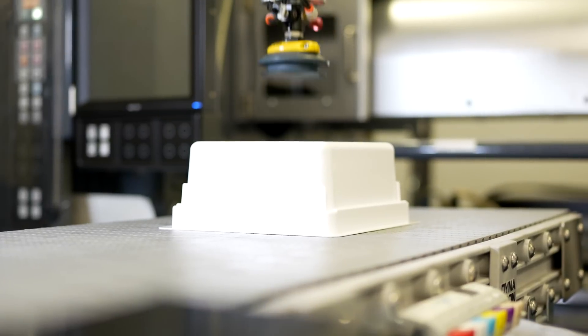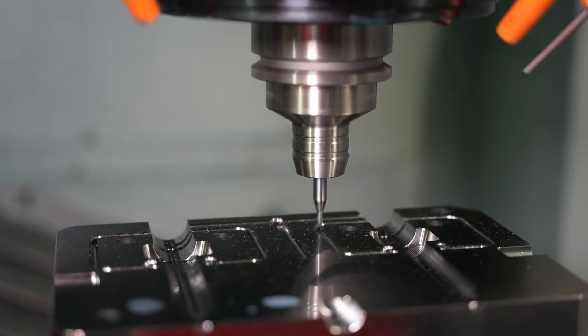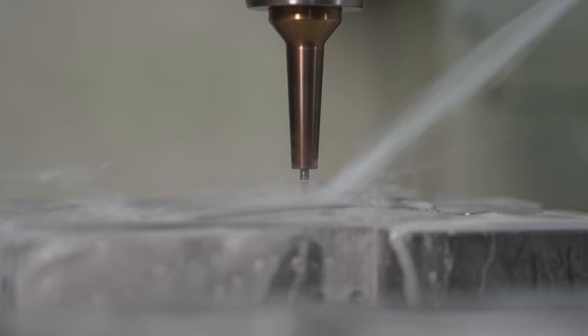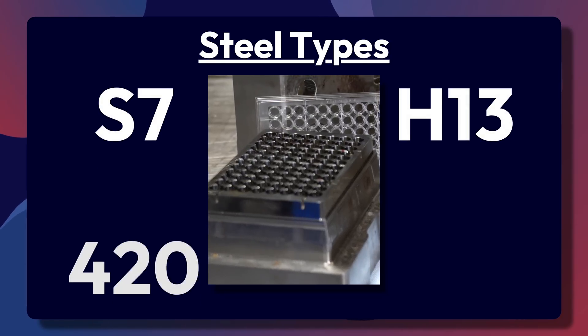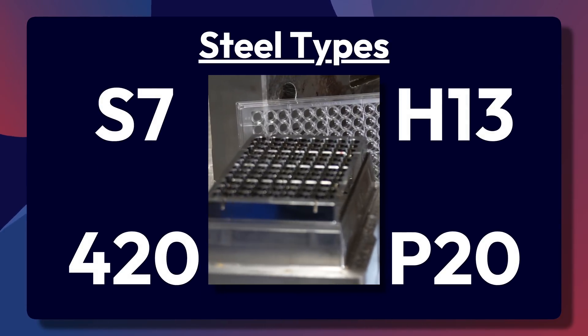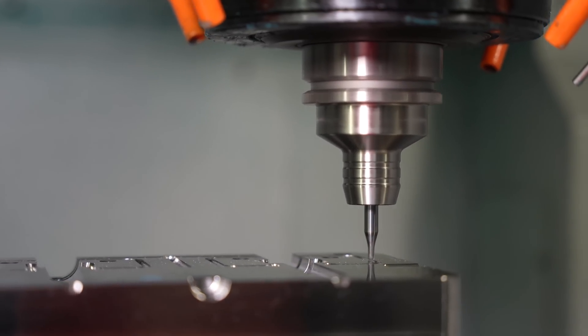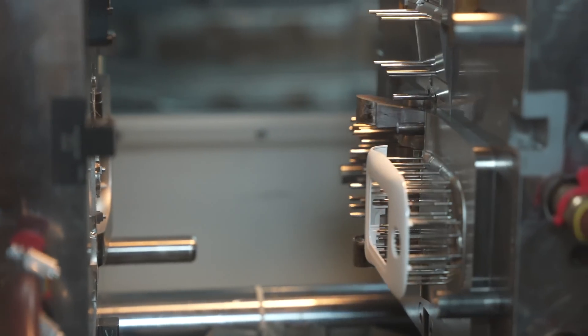Before we talk about the advantages and disadvantages of a single cavity tool, it's worth briefly discussing the different types of materials that can be used when building an injection mold. The most common steels that we use at Crescent Industries are S7, H13, 420 stainless steel, and P20. Each material has its own advantages and disadvantages, and the hardness of that material will impact the class of your mold, which determines how many cycles it is warrantied for.